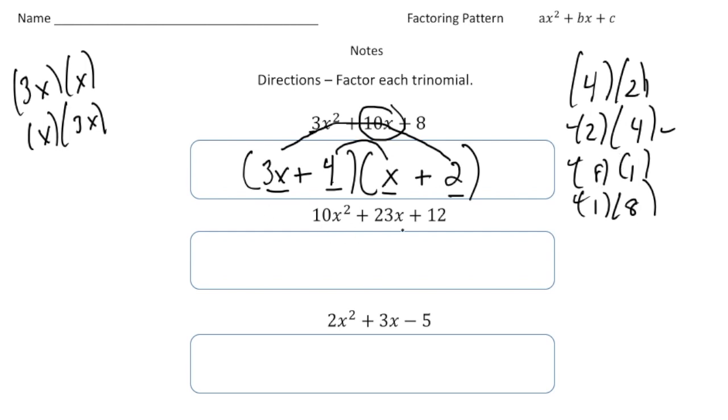Here we have 10x squared plus 23x plus 12. So again, let's create our parentheses here. Now this one's a little more advanced than the first one because 10x squared could be written as 5x times 2x. It could also be 2x times 5x or 10x times 1x or 1x times 10x. So there's four possibilities there.